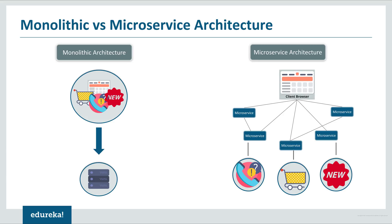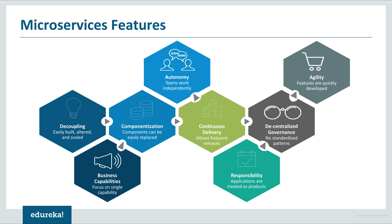Let's summarize the difference between both architectures. Monolithic architecture had a single framework for all features on a single database, whereas microservice architecture has different microservices for each feature, each handling its own database. The features that made developers shift to microservices include: applications were easily built, altered, and scaled; they focused on a single capability; all components could be easily replaced; teams worked independently; frequent software releases were allowed; applications were treated as products; there were no standardized patterns; and all features were quickly developed.